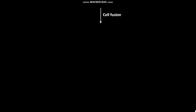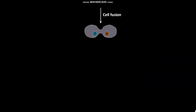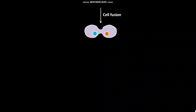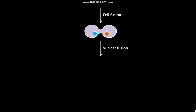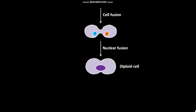In the next step, cell fusion occurs. As a result, a cell having two nuclei and fused cytoplasms comes into existence. This is followed by nuclear fusion, producing a diploid A or alpha cell.